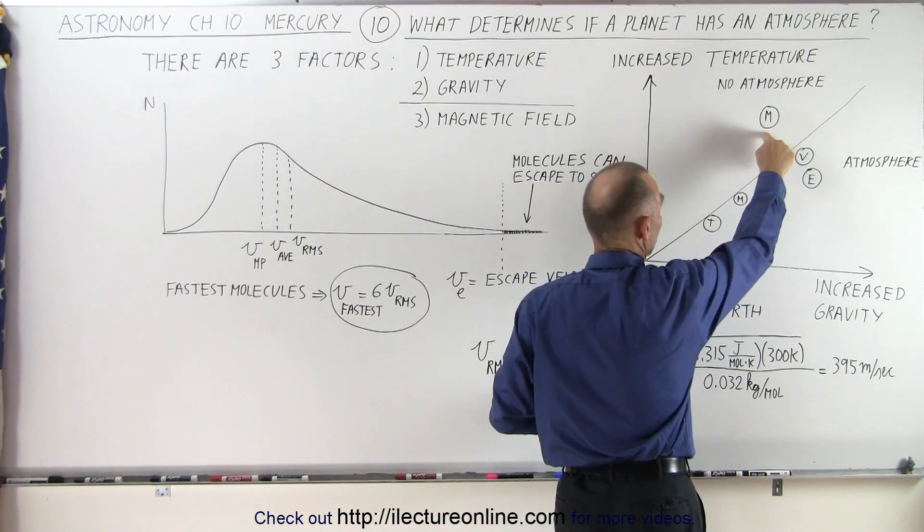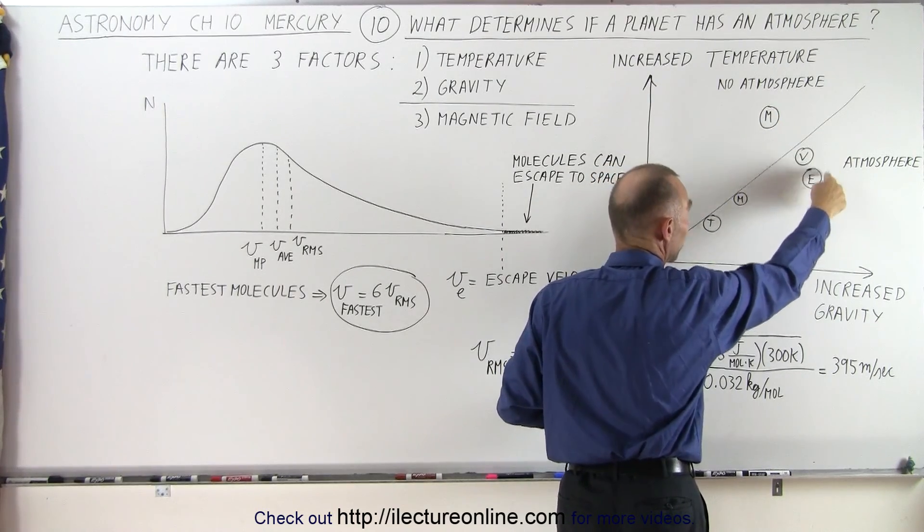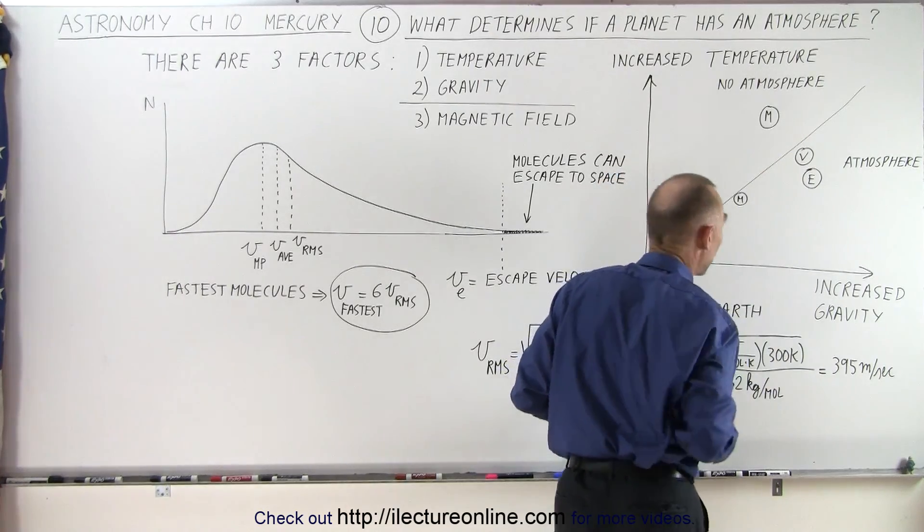So, the molecules will move faster on Mercury because it's closer to the Sun, faster on Venus compared to the Earth, but not as fast as Mercury, and Mars, of course, the molecules will move slower because it is colder.